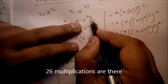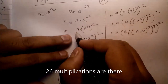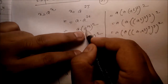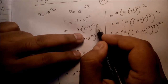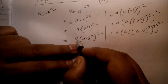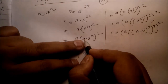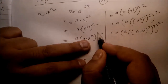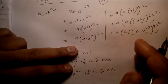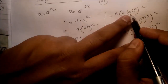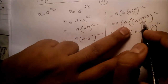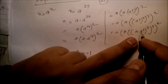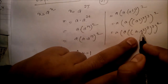We can write a^27 as a times a^26, since 26 plus 1 is 27. Then 26 can be written as (a^13)^2. For 13, we write a times a^12, then a^12 as (a^6)^2, a^6 as (a^3)^2, and a^3 as a times a^2.